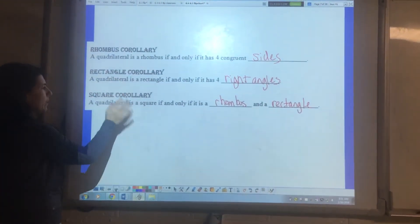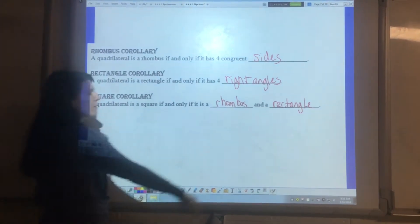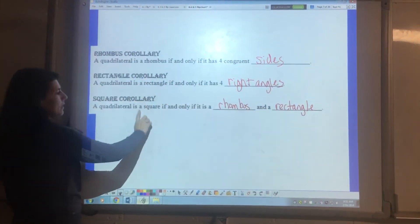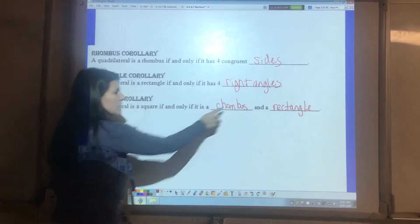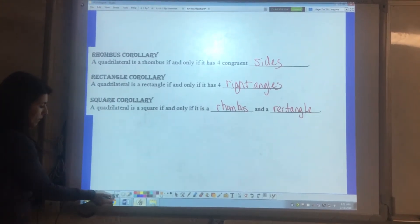The exact same thing with the rectangle and with the square. So if it is a rhombus and a rectangle then it's a square. If it's a square then it's a rhombus and rectangle which means it fits all of those criteria.